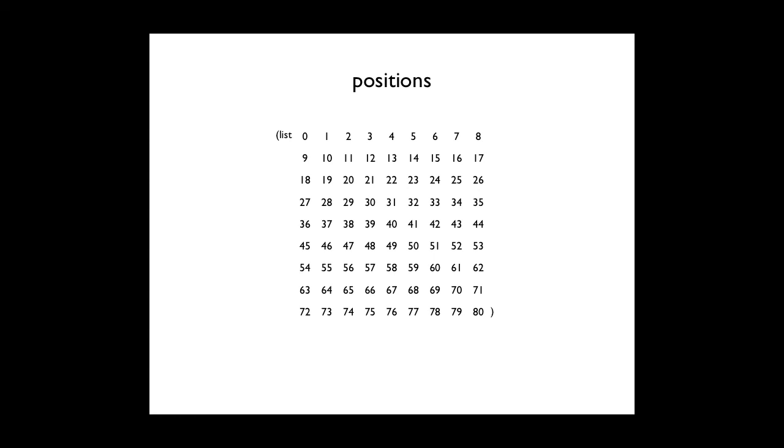Positions start at 0. So the position of this cell of the board is 2. Or the position of this cell of the board is 19. I just laid it out this way so you can kind of understand how the positions are working. They start at 0 and they go all the way up to 80.